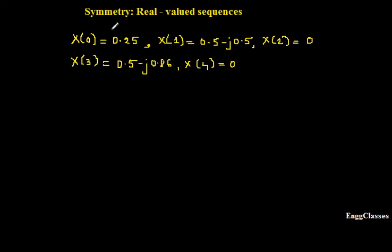The numerical says that the first 5 points of the 8-point DFT are given: x(0), x(1), x(2), x(3), and x(4). The task is to find the remaining 3 points. x(n) itself is not given — only x(k), and only 5 points of it. The remaining 3 points are being asked.